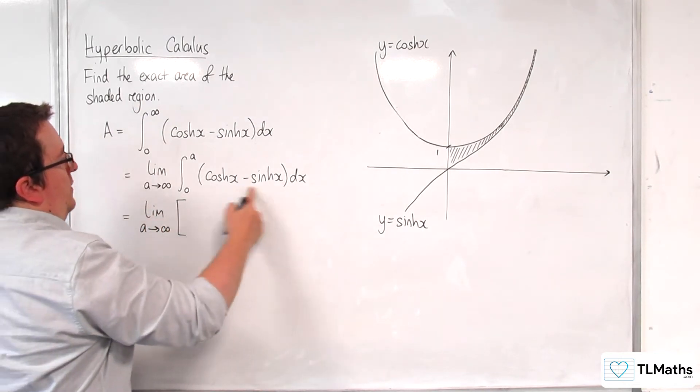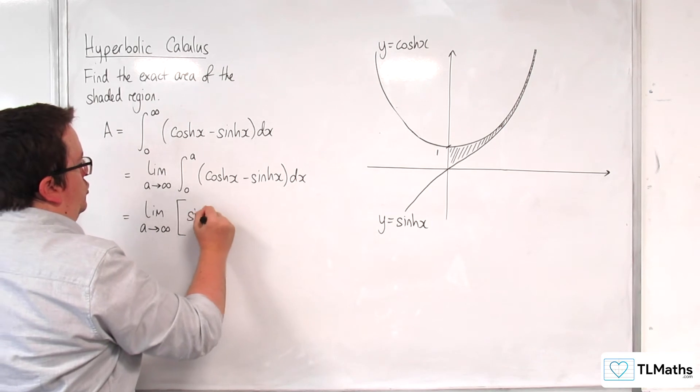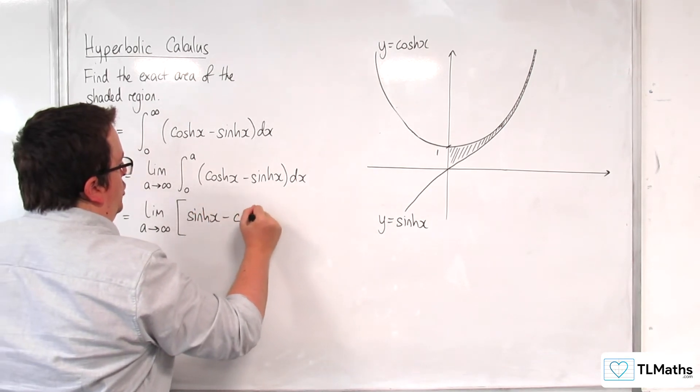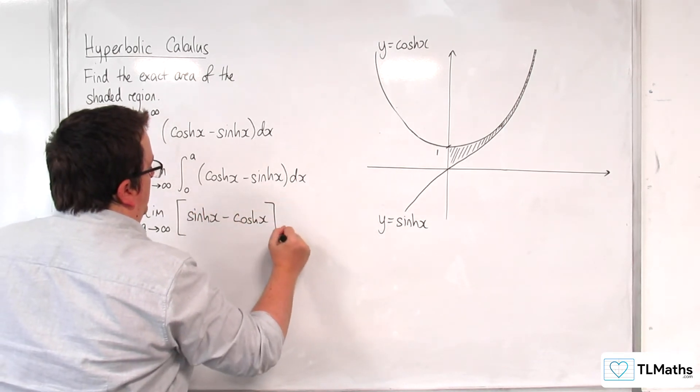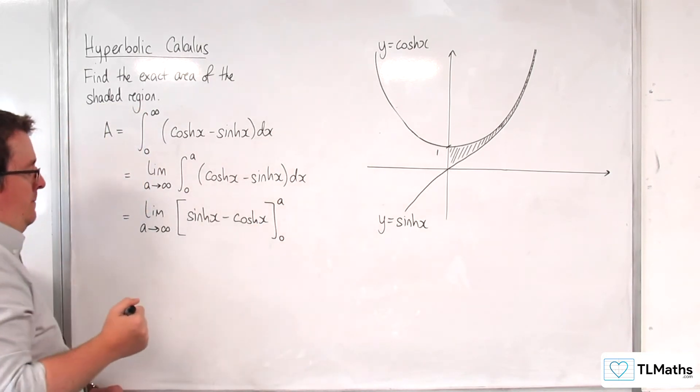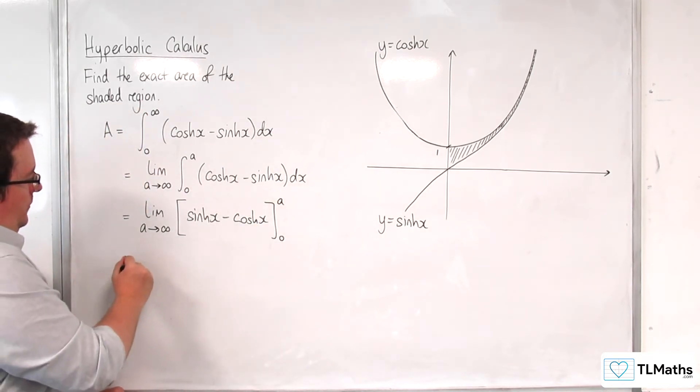So this integrates to sinh x take away cosh x, value in between 0 and a.